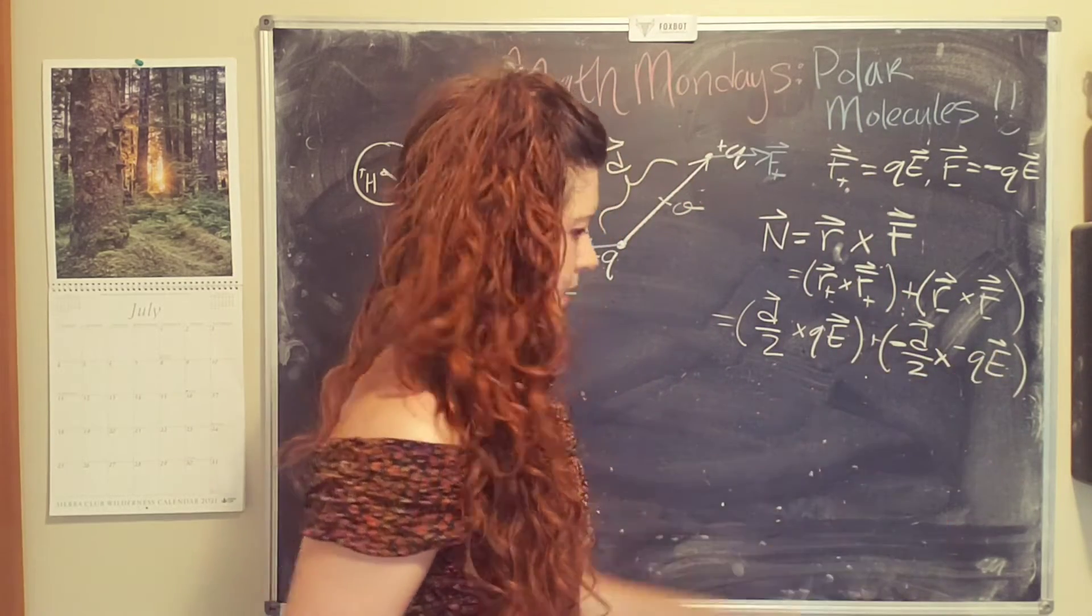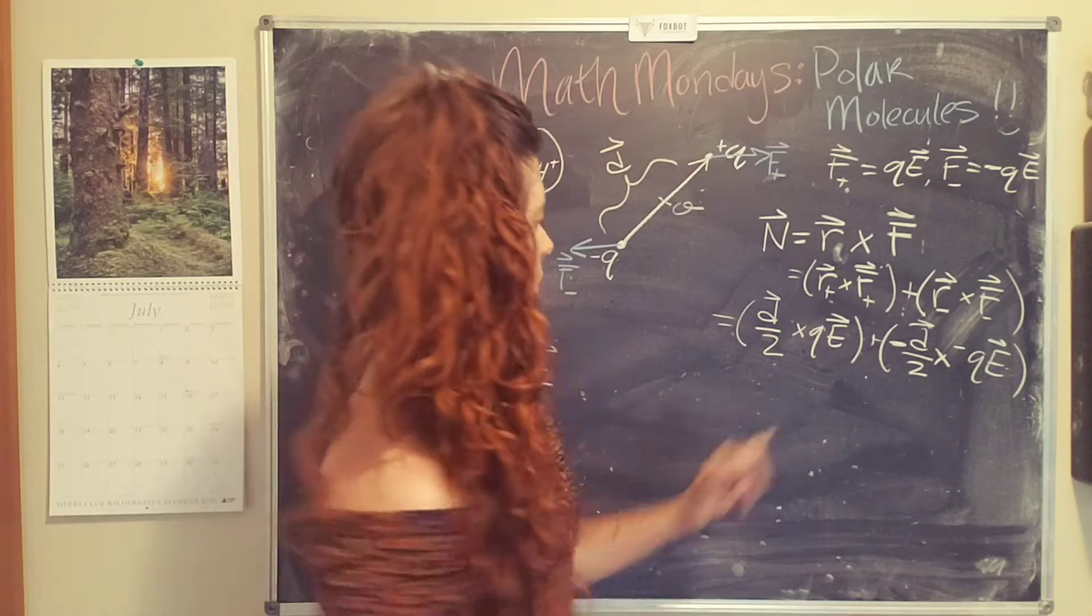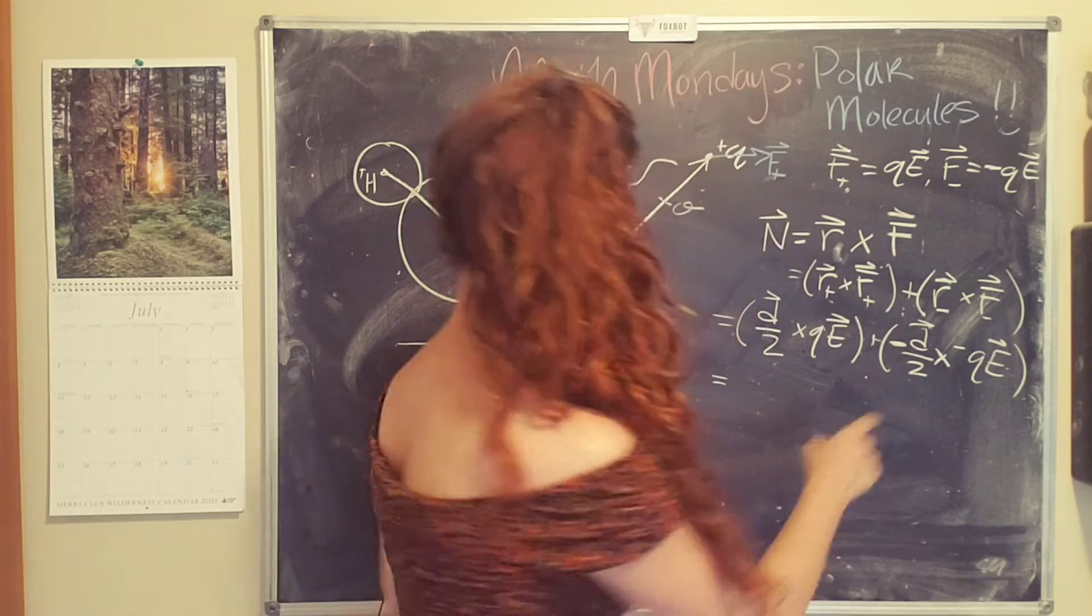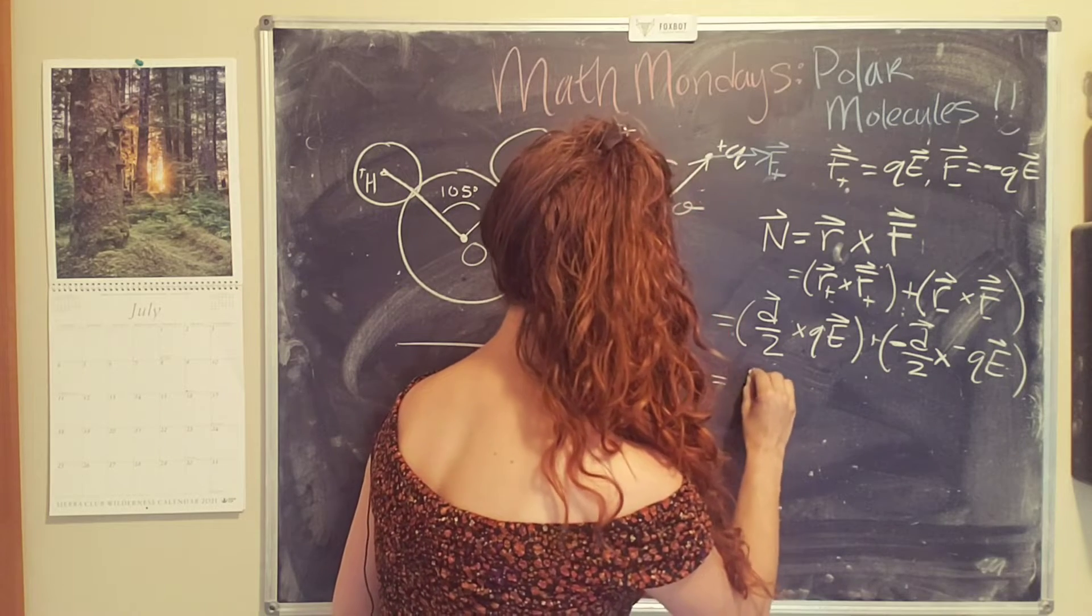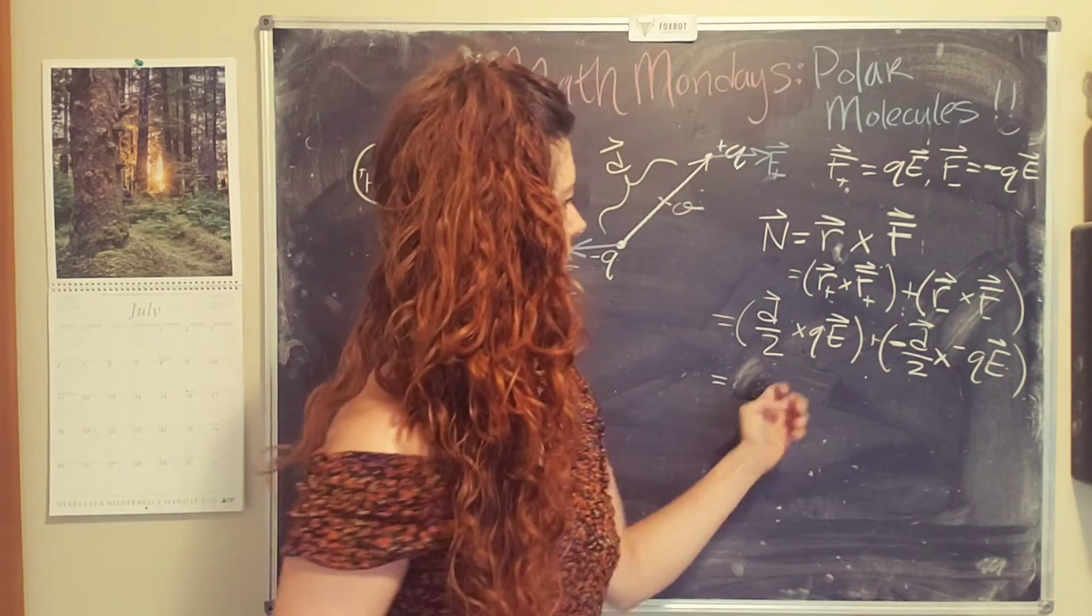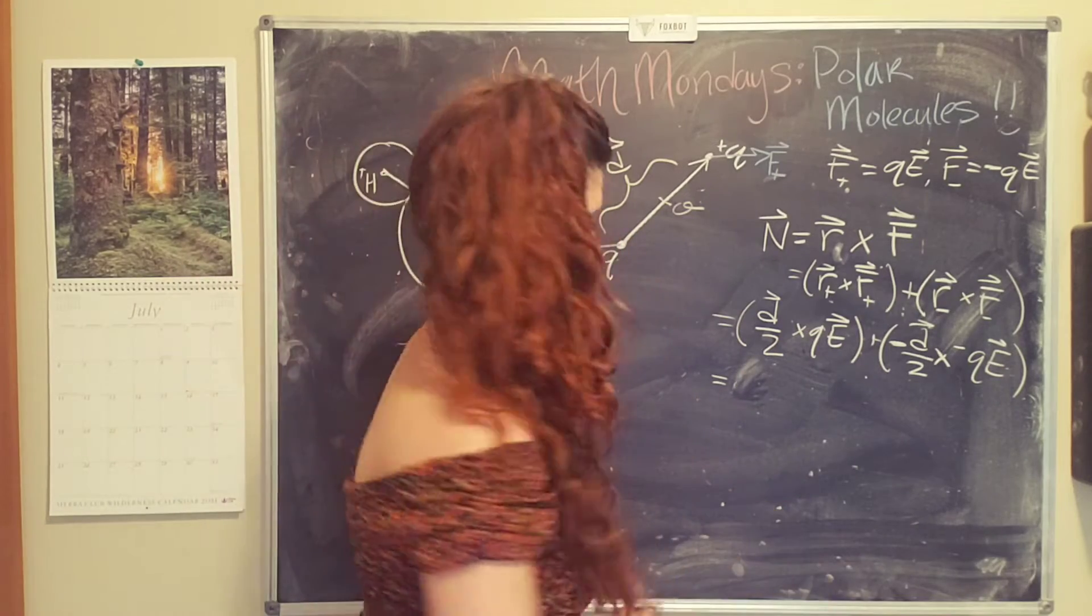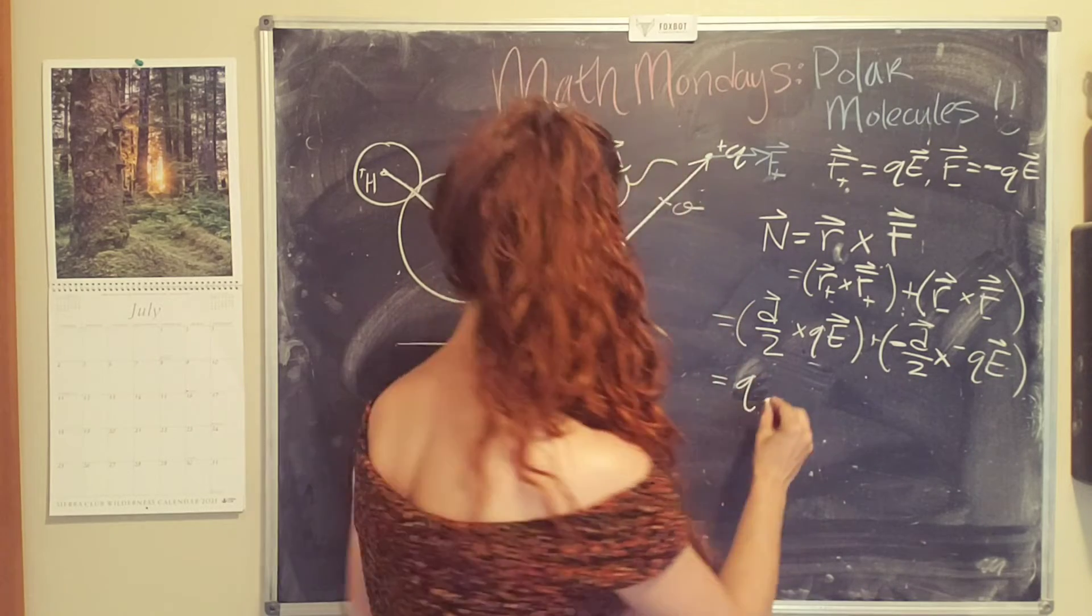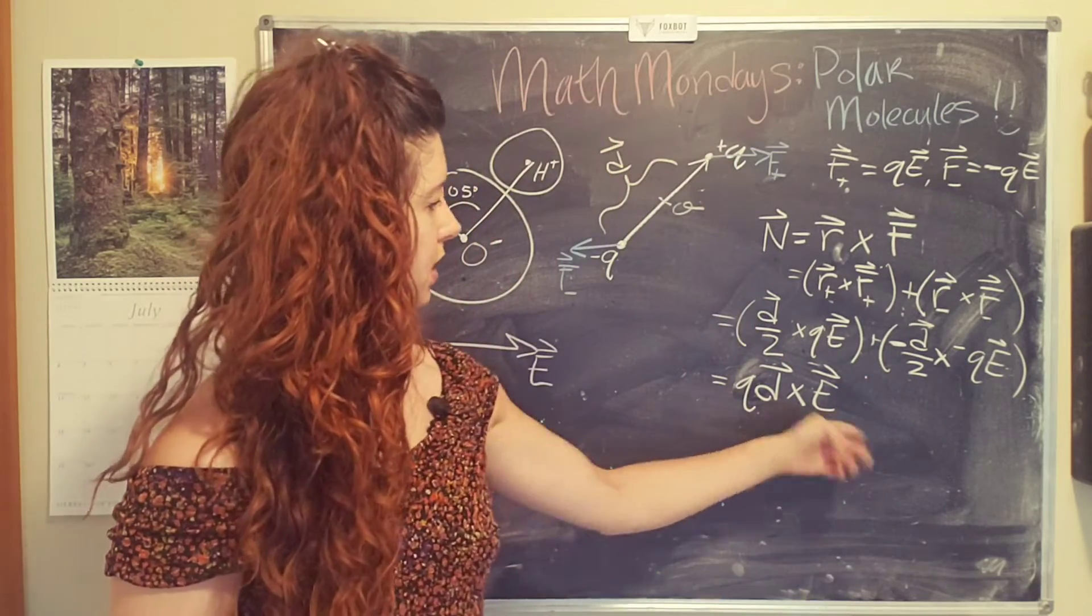These negative signs are going to cancel. We can pull the Qs out and we can simplify. The halves are going to equal one. One half plus one half is one. We want to keep the cross product because we don't know what E is. So we can't really solve for the cross product, but we can do some math tricks. Q is a constant, so we can pull it out. D is a vector. So we got to keep that, but the one has equal one. So we end up with QD cross E.